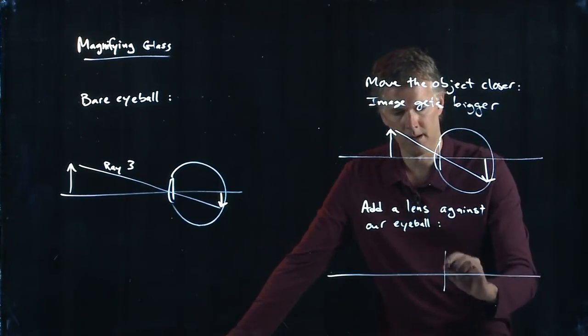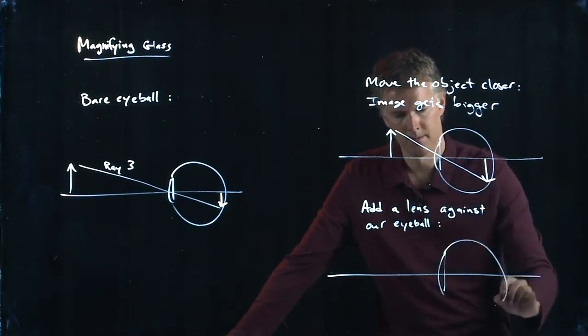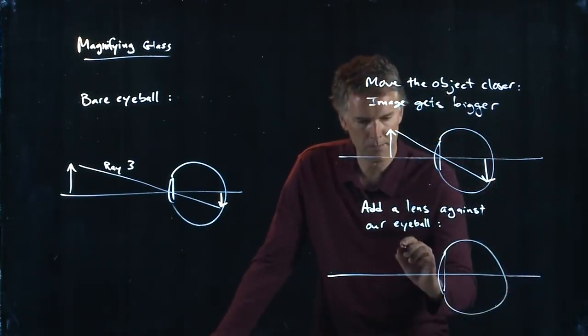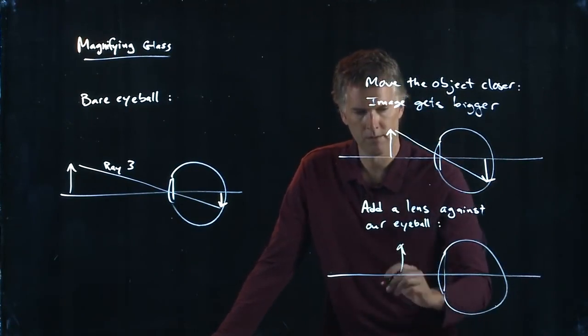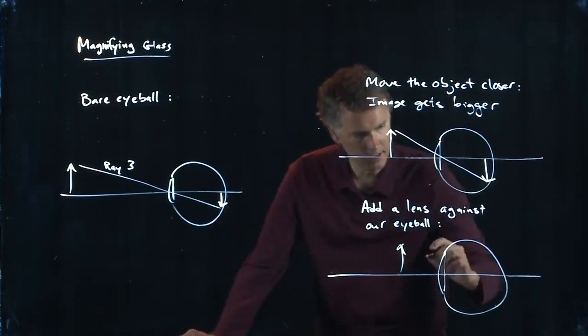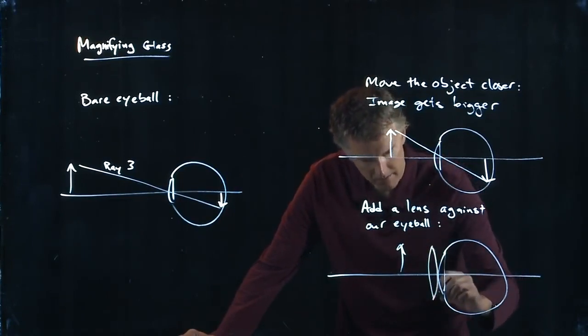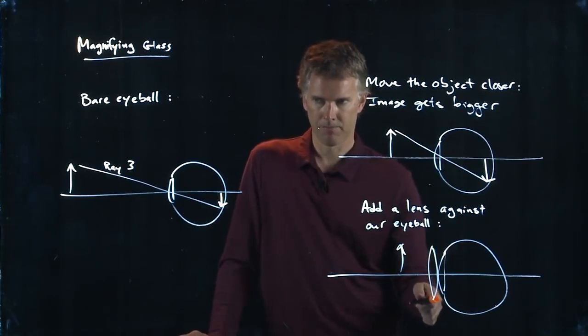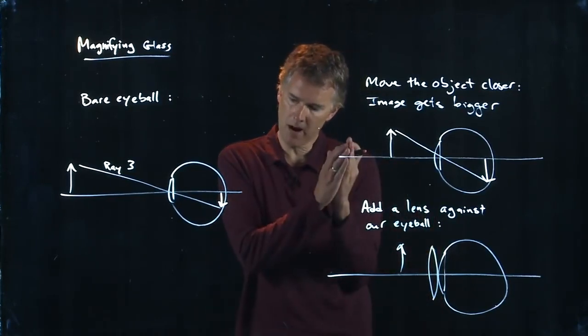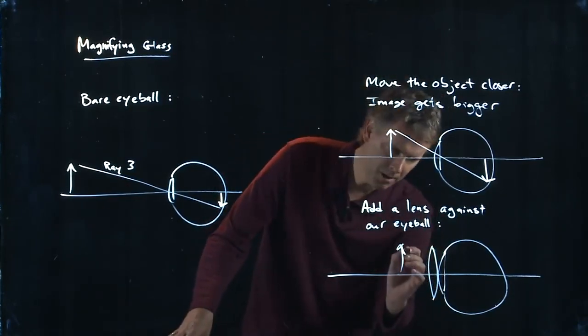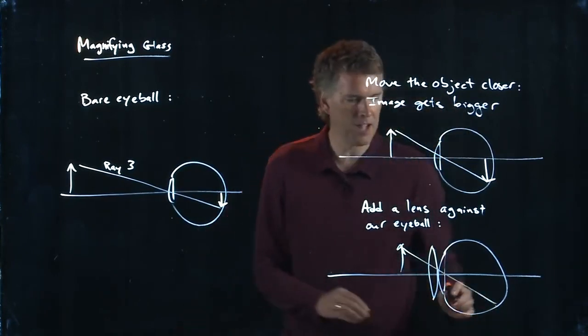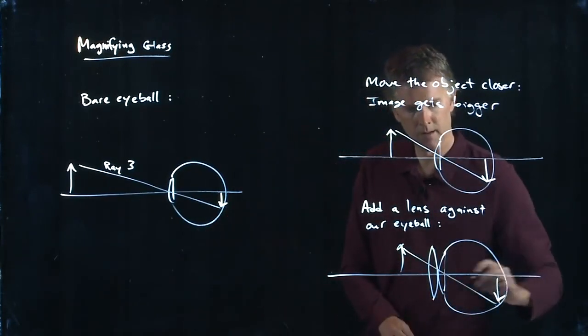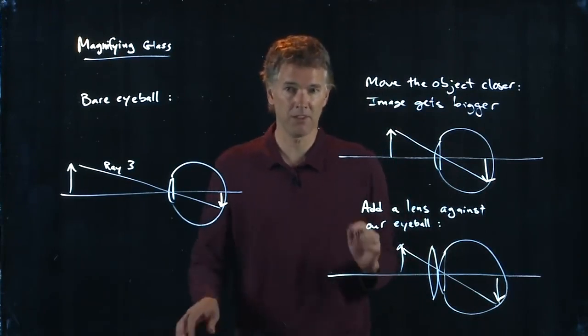Here's the eyeball, here's the object in the same position, and now let's put an extra lens right there. That's our magnifying glass. If it's right up against our eyeball, then ray 3 follows the same trajectory and it's the exact same size. The image is the same size in both of these pictures.